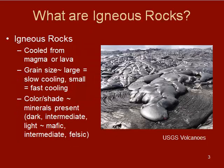What are igneous rocks? Igneous rocks cool from magma or lava. Magma is molten rock that exists below the surface of the earth. Lava is molten rock that exists at the surface of the earth. The grain size of your igneous rocks corresponds to how fast or slow that magma or lava has cooled.